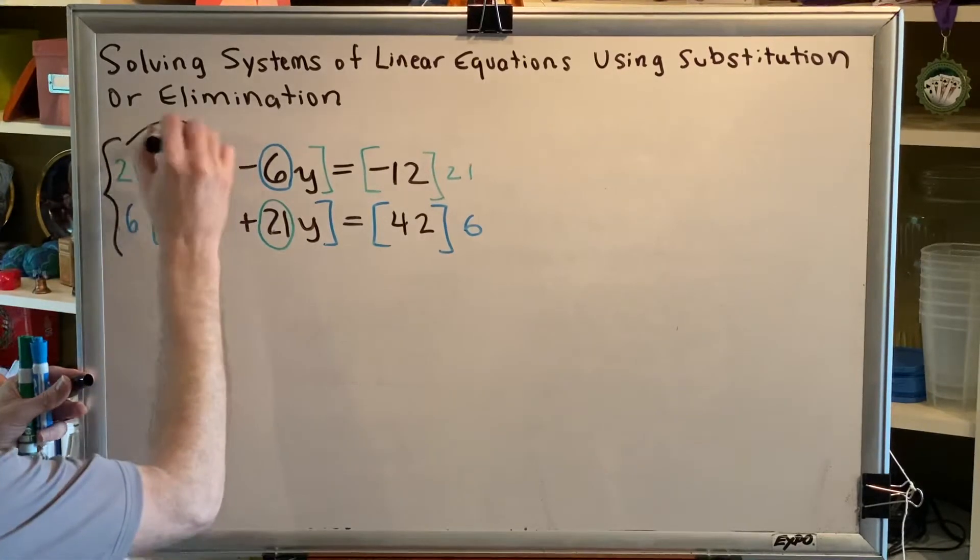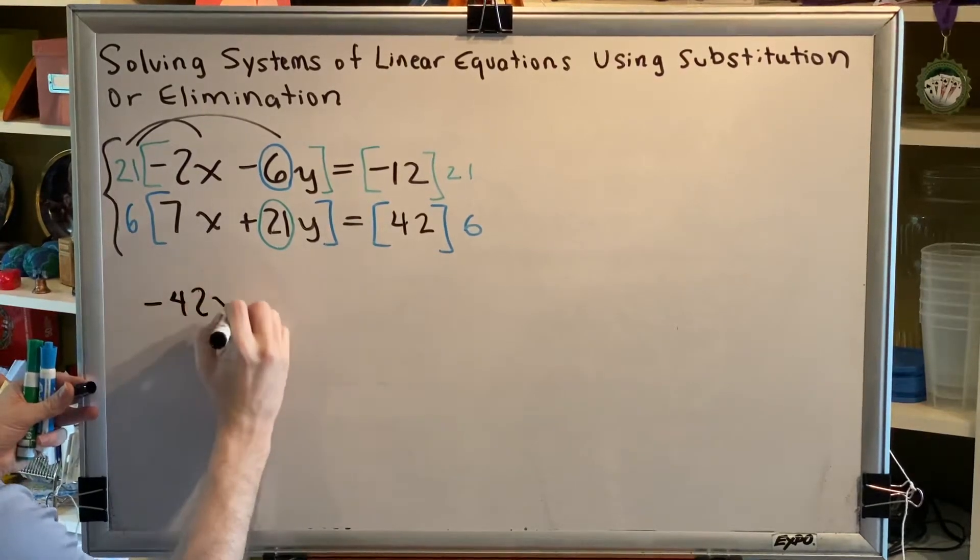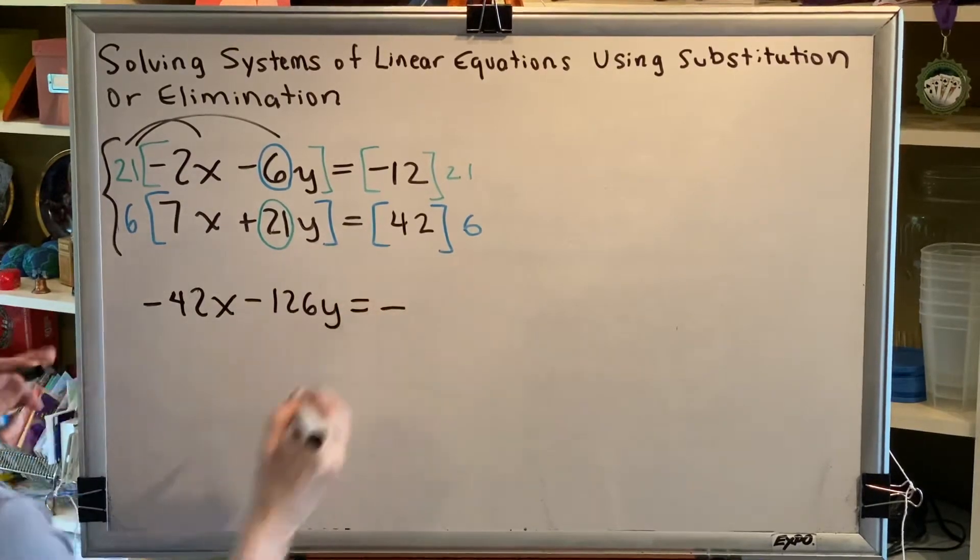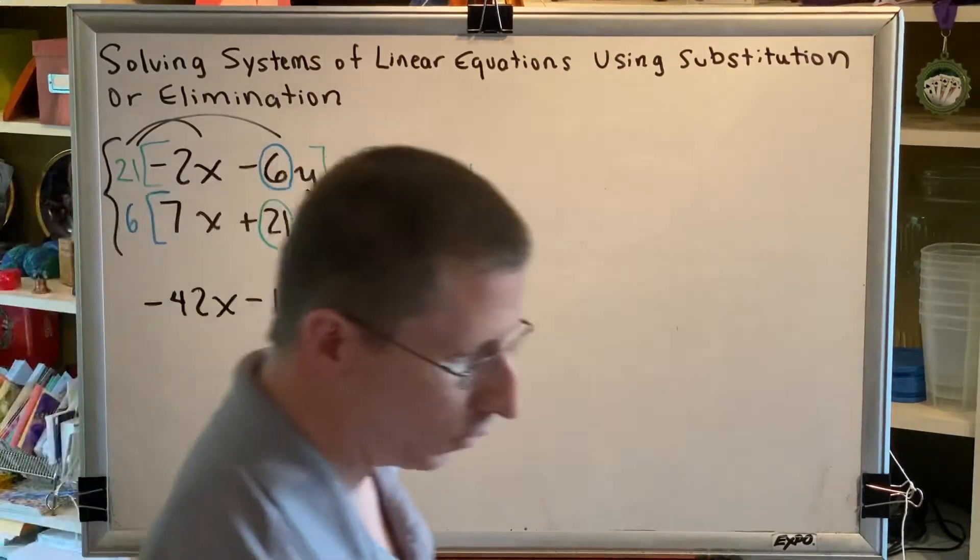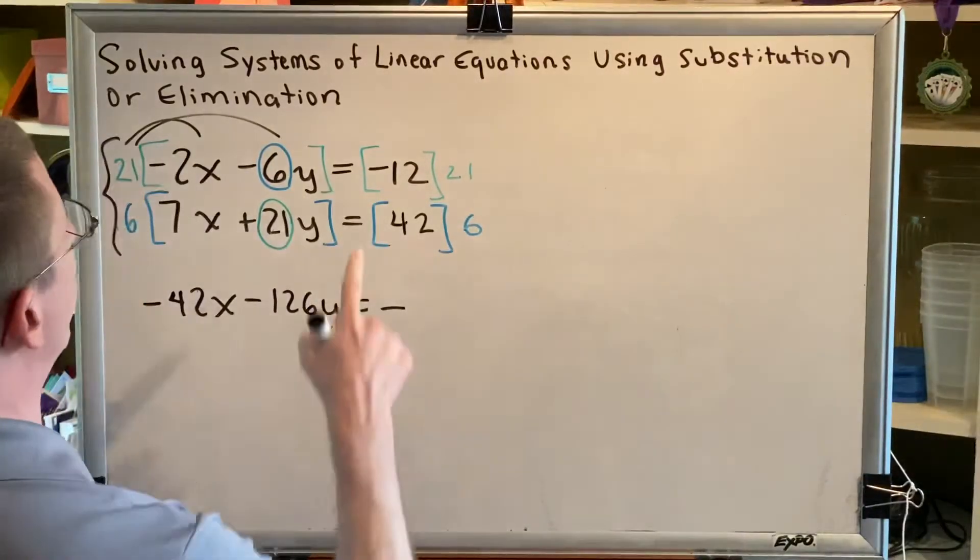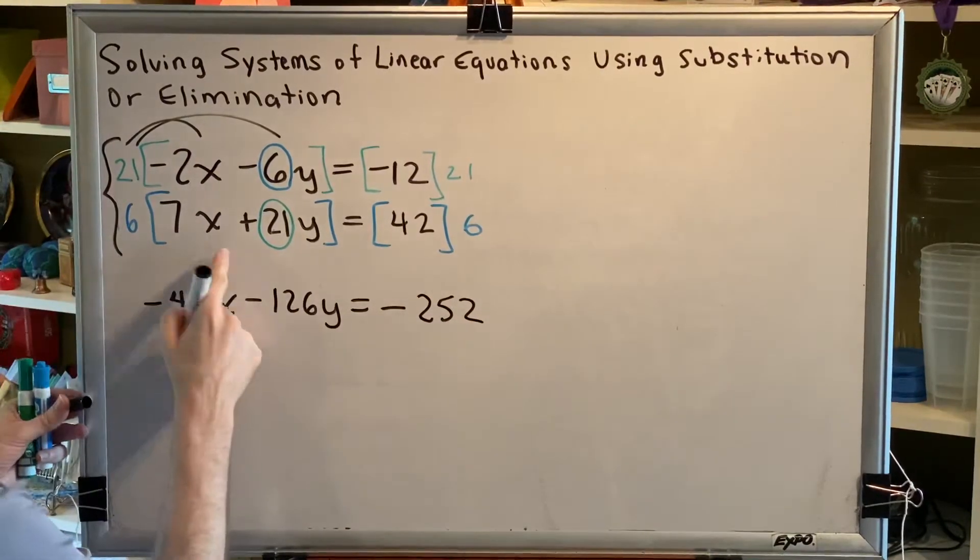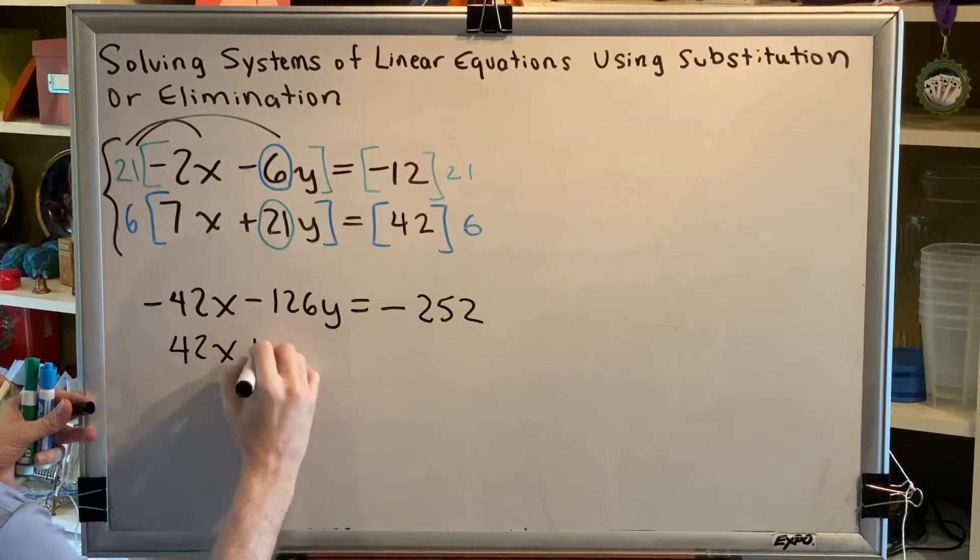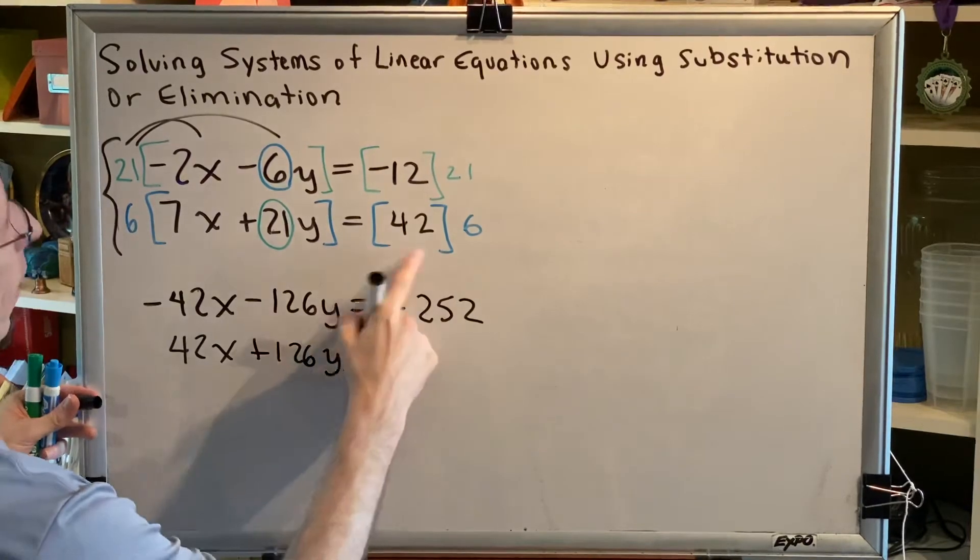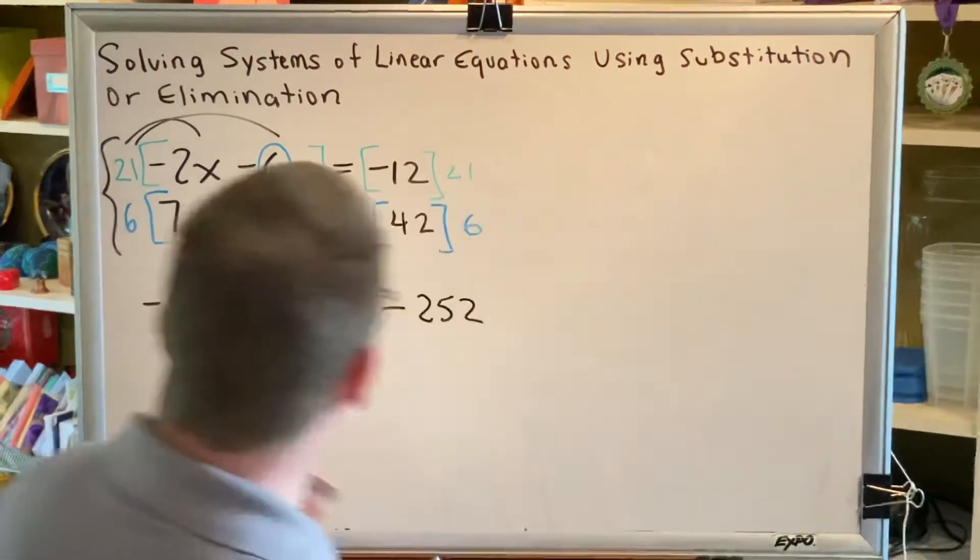So let's go ahead and complete our distribution. Let's distribute the 21 first. We would get negative 42x minus 126y equals negative something. I'll use a calculator for 12 times 21. 252, and of course it's negative. And then on the bottom, 6 times 7x would be 42x plus 6 times 21y is 126y equals, and 42 times 6 is 252.